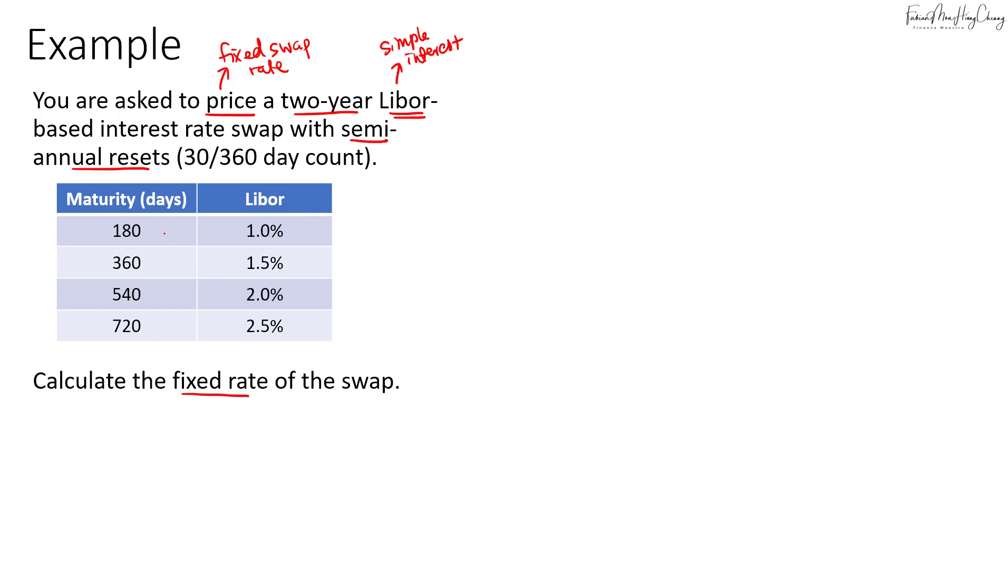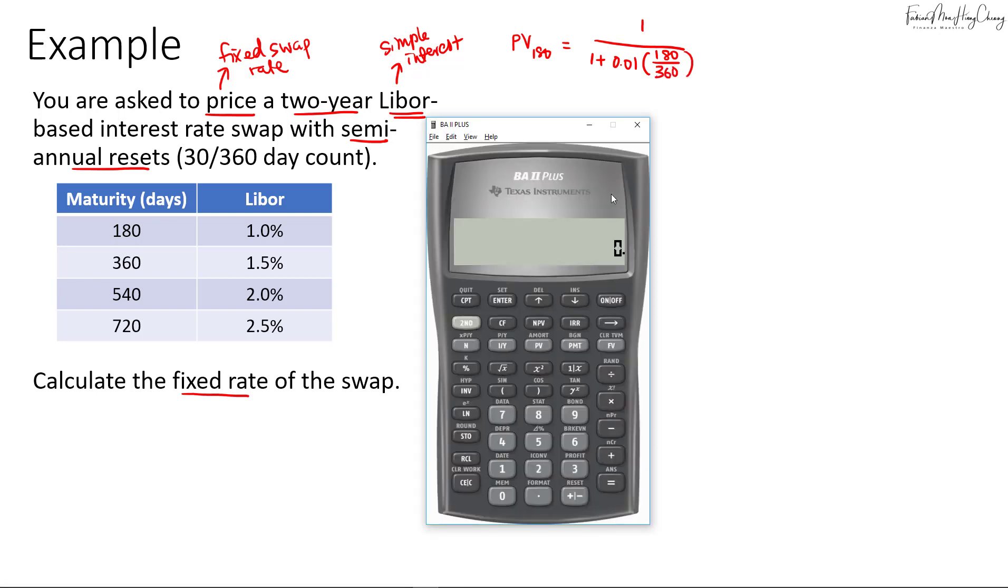For example for the 180 day LIBOR with a interest rate of 1%, the present value of this factor assuming a $1 payoff, we'll take $1 divided by 1 plus 1% multiplied by 180 days over 360. To calculate in the financial calculator we'll calculate the denominator first. So that's 1 plus 0.01 over 2 or we can multiply by 180 over 360.